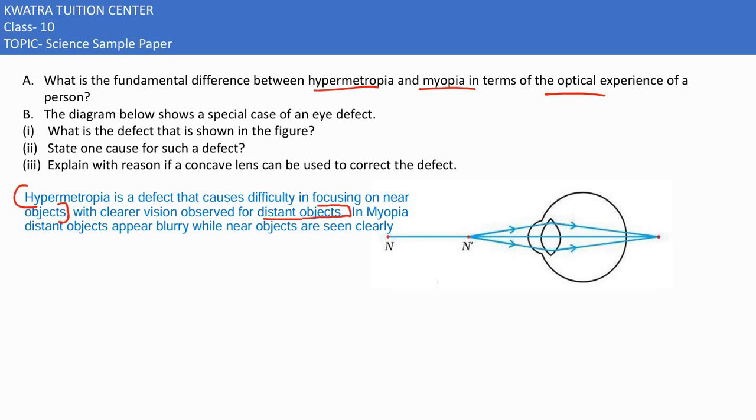But if we talk about myopia, distant objects appear blurry to them, while near objects are seen clearly.